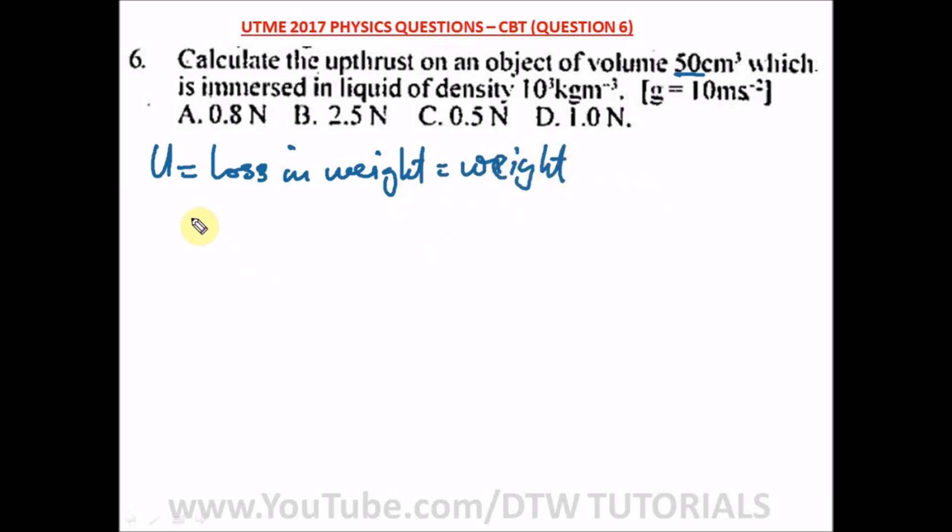The formula to get weight is W = mg, so this is our upthrust. But first we have to find our mass m. To get mass, since we're given density, remember density = mass/volume.